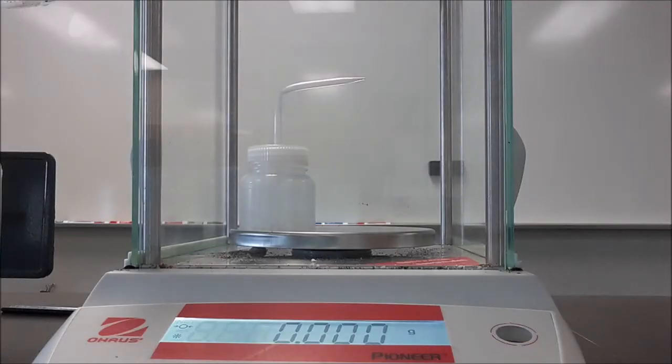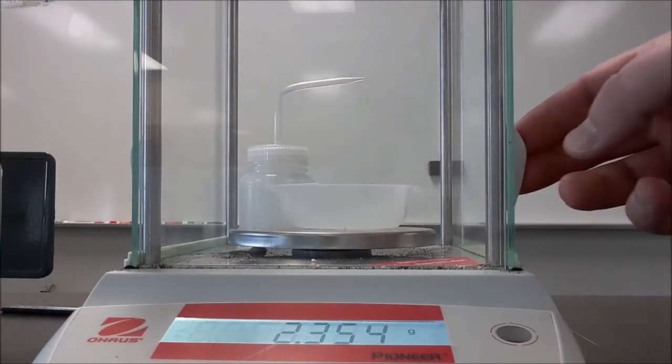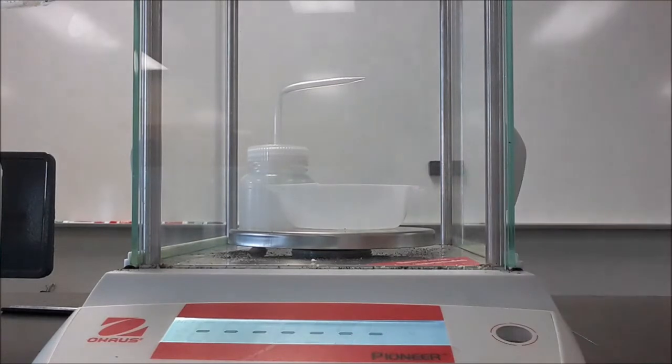Once we've correctly calculated the mass that we're going to need, the next step is to actually weigh it out. So we'll take our weigh boat and we'll put it on the balance and we'll zero the weigh boat on the balance and then we will add the pre-calculated mass.